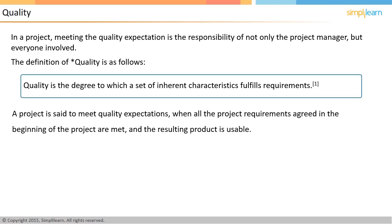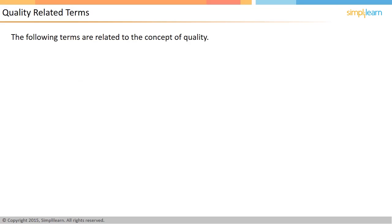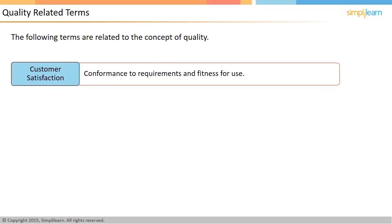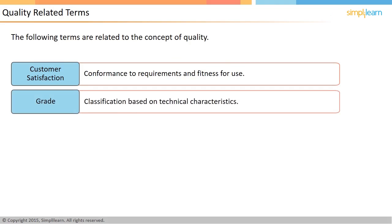In the next screen, let us look at some quality-related terms. It is important to discuss a few terms to understand the concept of quality better. Customer satisfaction is defined as conformance to requirements and fitness for use. It is important to understand the subtle distinction between quality and grade. Grade is a classification based on technical characteristics. Low quality is always a problem, but low grade may not be a problem — rather it would be a matter of choice.